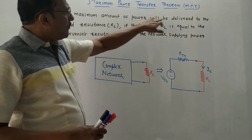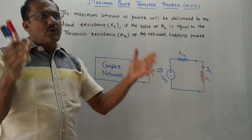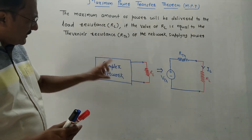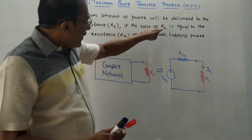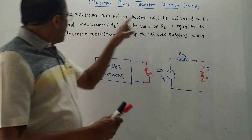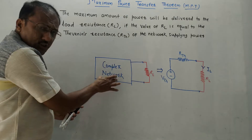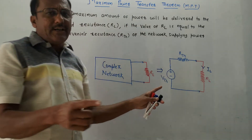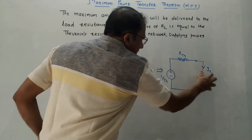The statement is: the maximum amount of power will be delivered to the load resistance RL. Consider a complex network — a network which contains some sources, meaning voltage sources, current sources, along with some resistances. RL is a load connected across this complex network. We can reduce this complex network using Thevenin's theorem into a simple network containing one voltage source VTH in series with the Thevenin's equivalent resistance RTH, with RL connected as it is.